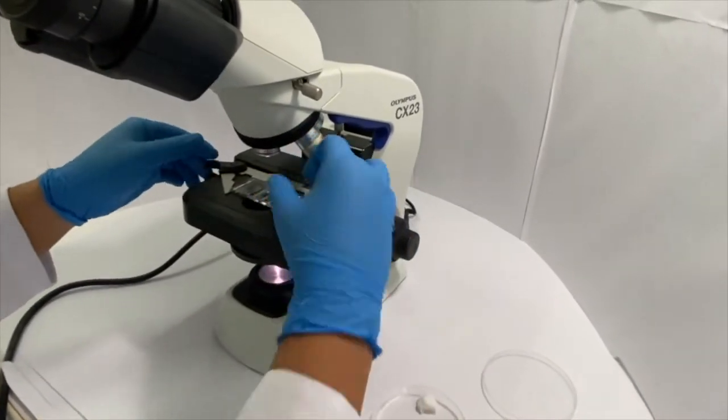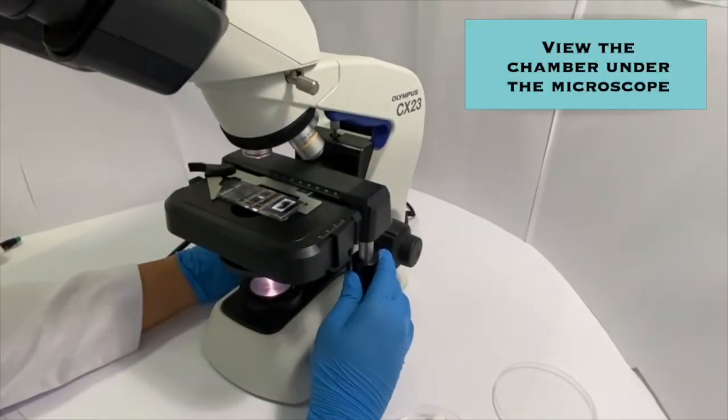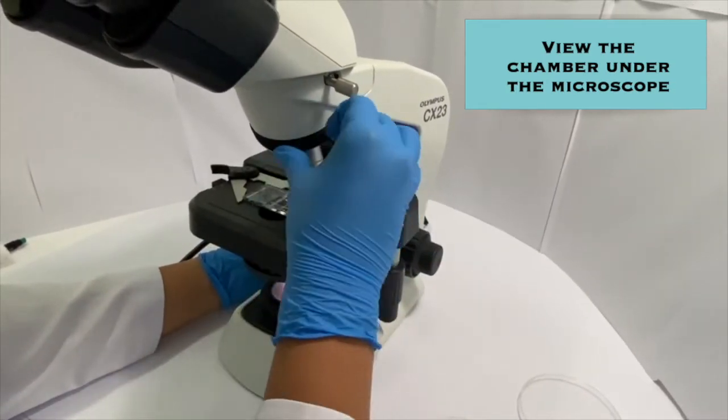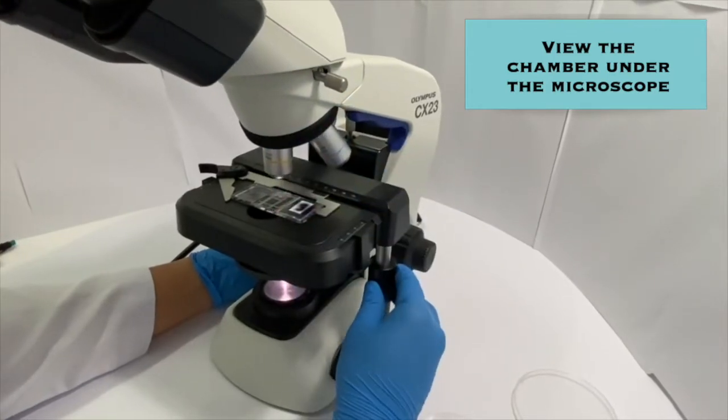First, view the chamber under the microscope using the scanning objective. Then, the low power objective, which is used to count white blood cells.